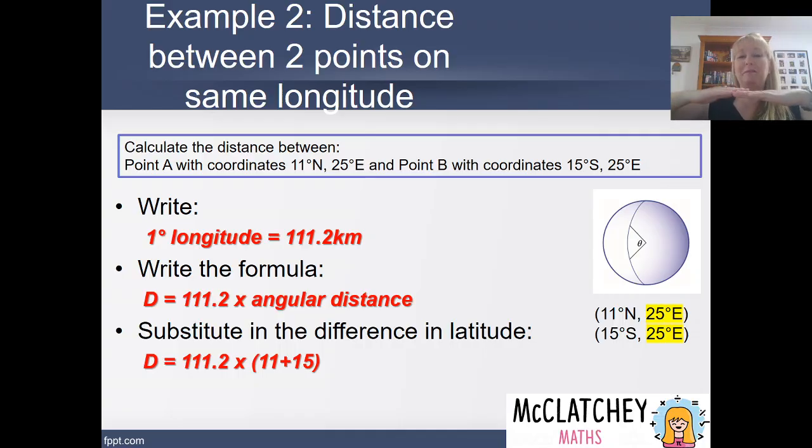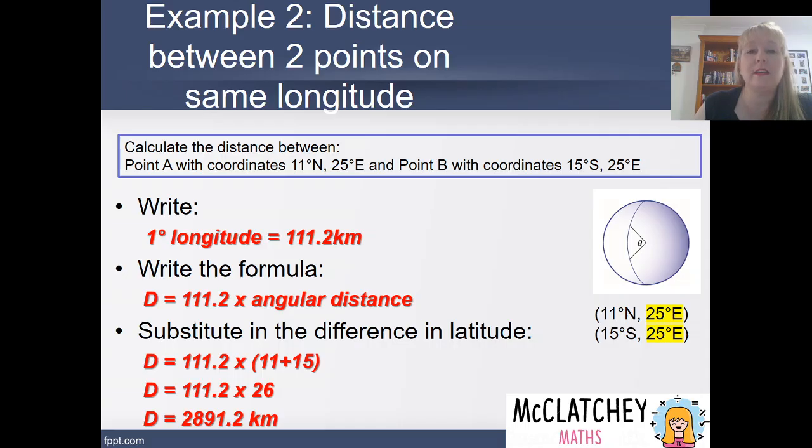So we're going to calculate that difference in latitude. We've got that 15 degrees south plus the 11 degrees north. So we've really got a difference of 26 degrees altogether between those two points. And if we multiply that out, we get to 2,891.2 kilometres.